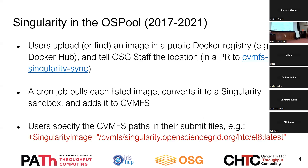Users can't directly write to the CVMFS area. Instead, what they do is tell OSG staff what image they want to use, pointing to an image in the public Docker registry like Docker Hub. We have an automated cron job that pulls each image we know about, converts it, and adds it to CVMFS. Once that's done, in their submit file, the user specifies the path to the CVMFS directory in their Singularity image custom attribute.